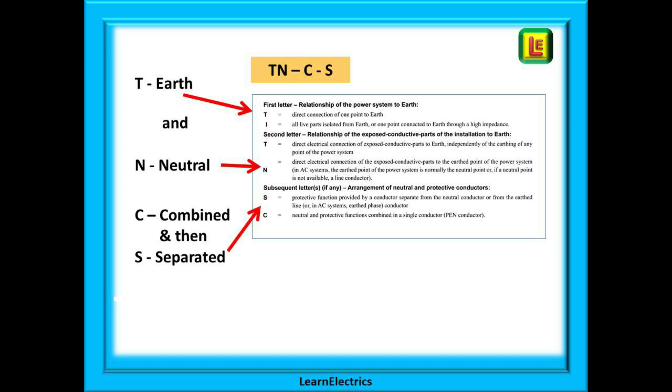Consider TNCS next. T for earth. N for neutral. C for combined. The earth and neutral share the same conductor. And then S for separated. At the intake position to the building, the earth and neutral are given their own conductors that are separate from each other. We now have earth and neutral are combined and then separated.